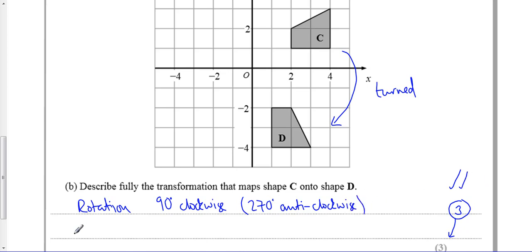But to get the third mark, you need to tell me the centre of rotation, the turning point. In this case, you can see the turning point is there because it's 2 by 1, 2 by 1. If you spin that round, that's going to be the same shape.